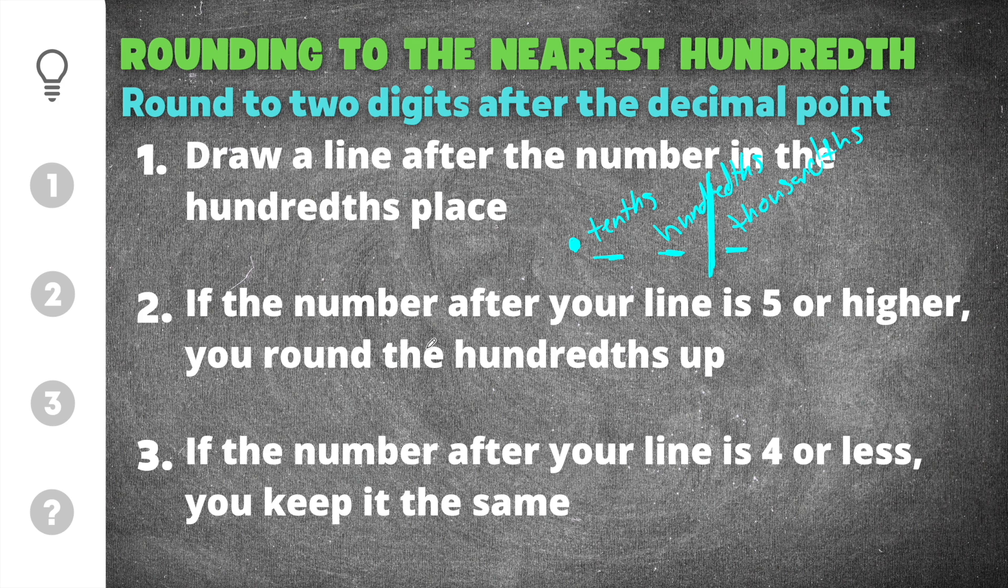The second thing to remember is if the number after your line is five or higher, you round the hundredths up. The number after that line is the thousandths. If that number is four or less, you keep it the same. So basically, if it's five to nine, it goes up. If it's zero to four, it stays the same.